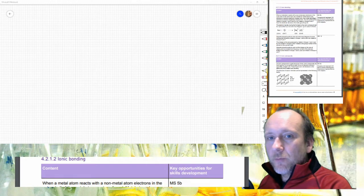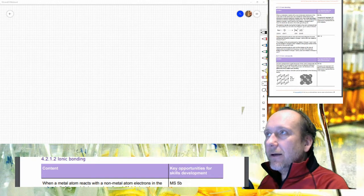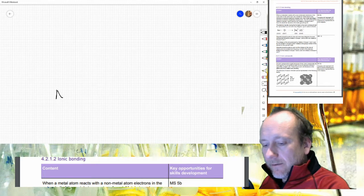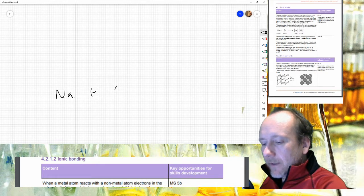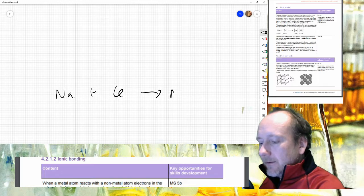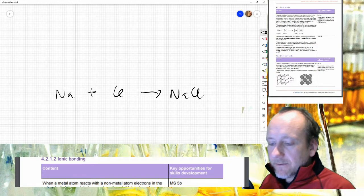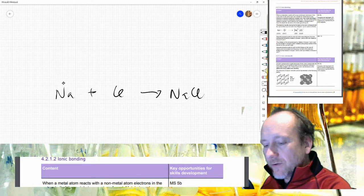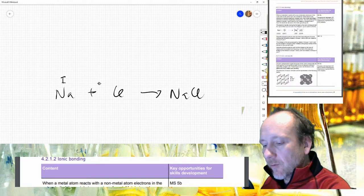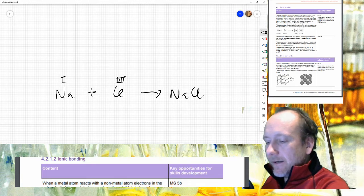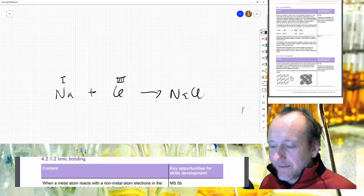So if we pick a group one and a group seven metal and non-metal, like for example sodium, then what we'll get is sodium chloride. And that makes a very nice one-to-one compound because that's group one, that's group seven, and they both add up to eight.